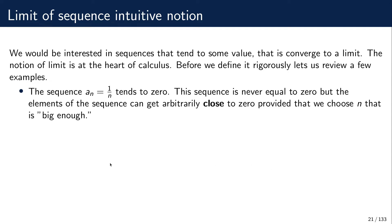For example, this sequence would tend to zero, or converge to zero. We can see intuitively what happens: the bigger the value of n, the smaller 1/n would be, and so we can make those elements of the sequence to be as close to zero as we please in terms of value.